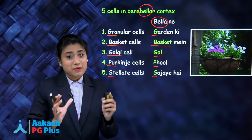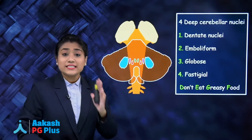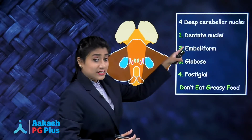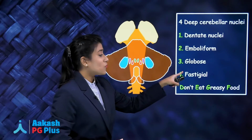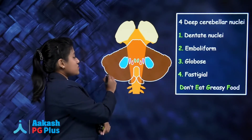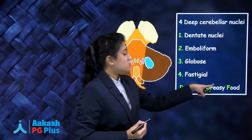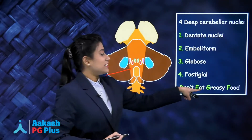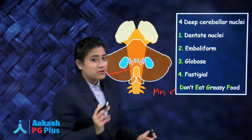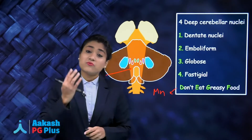There are four deep cerebellar nuclei: dentate, emboliform, globose, and fastigial. From lateral to medial, they are D-E-G-F. The mnemonic is 'Don't Eat Greasy Food' — this helps you remember these four deep nuclei from lateral to medial side.